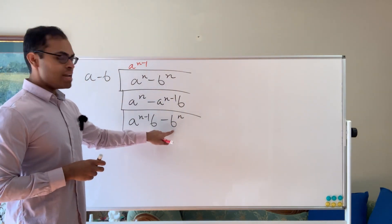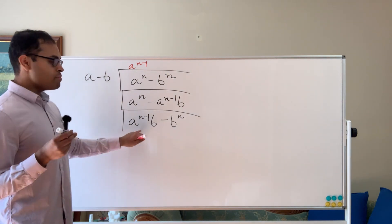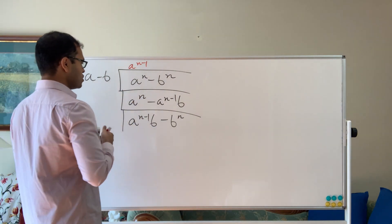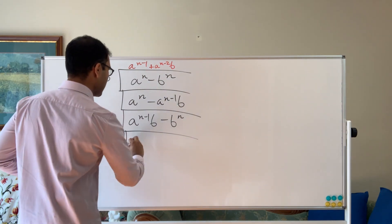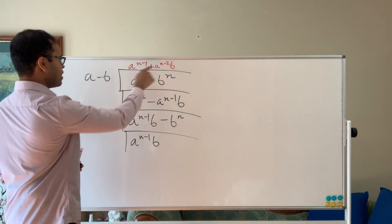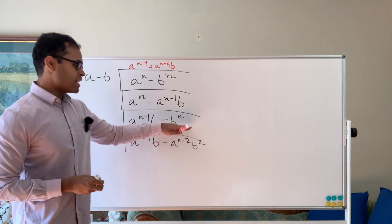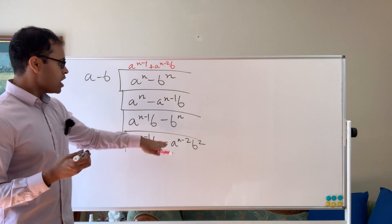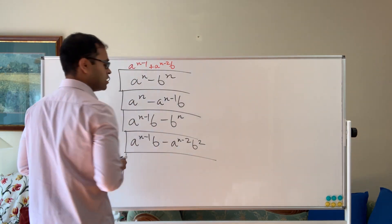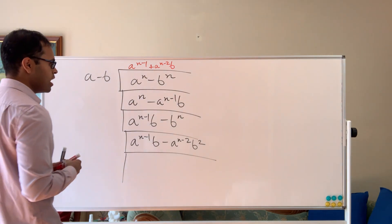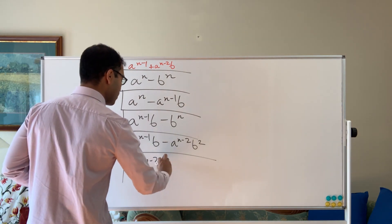We still have the negative b to the n but now have a new leading term. We do the same process: what times a gives a to the n minus 1 b? It's a to the n minus 2 b. So I write plus a to the n minus 2 b at the top. Multiplying by a gives a to the n minus 1 b, and multiplying by minus b gives minus a to the n minus 2 b squared. We subtract again, giving remainder a to the n minus 2 b squared minus b to the n. You can see the pattern: the power of a drops and the power of b increases each time.